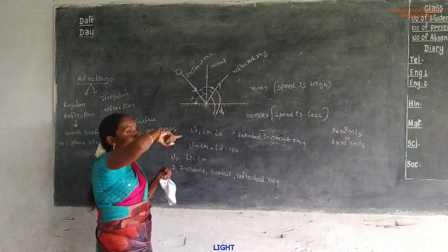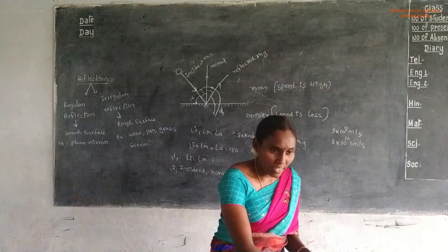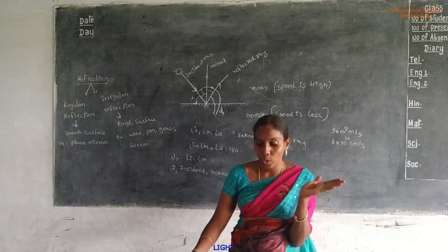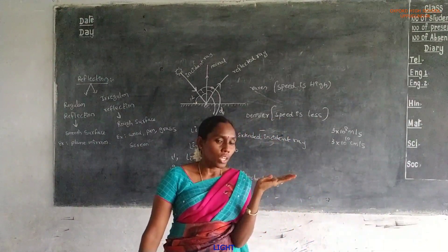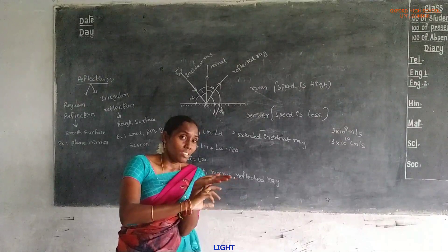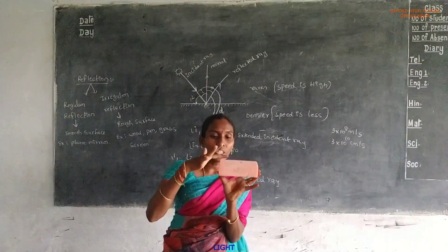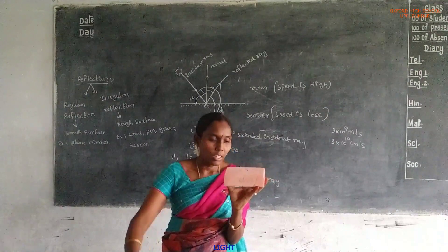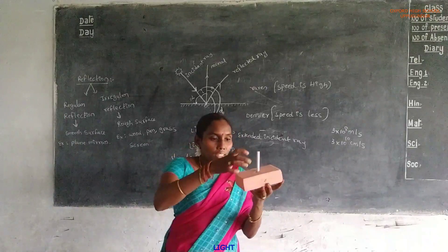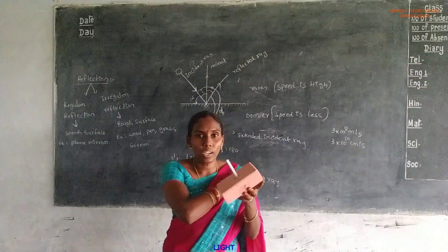How to draw the normal to a plane surface or curved surface? A plane surface means the surface is highly polished. Reflection takes place only on the upper side of this surface. The normal makes 90 degrees to the plane surface.